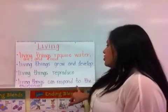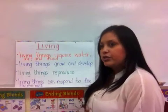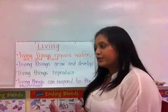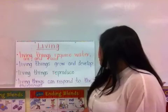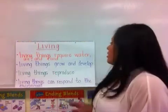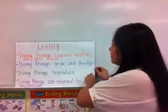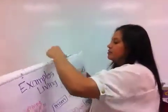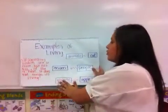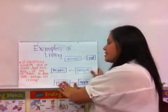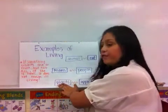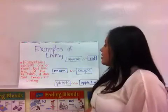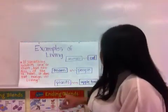Living things can respond to the environment. If you're cold, you get a jacket and cover up. If you're hot, you can turn a fan on. If something can adjust to the environment, then it's a living thing. Remember, if something exhibits one or more but not all of the four rules, it does not mean it's living. But if it does meet all four, then it is living.